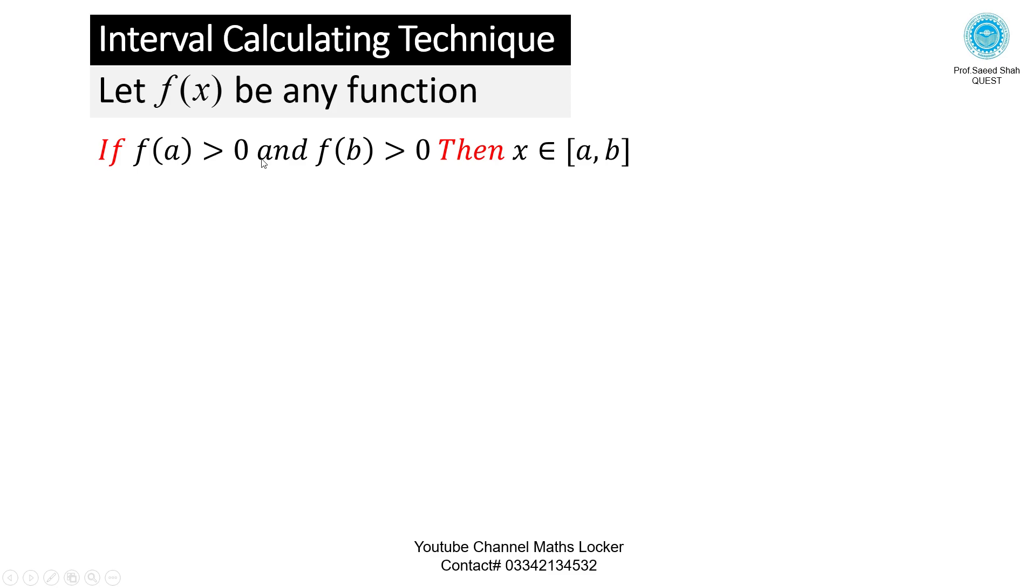If f(a) > 0 and f(b) > 0, then x in [a, b]. f(a) > 0 means above the x-axis, f(b) > 0 means positive above the x-axis. Here is the graph, there is no root. Both heights above the x-axis.